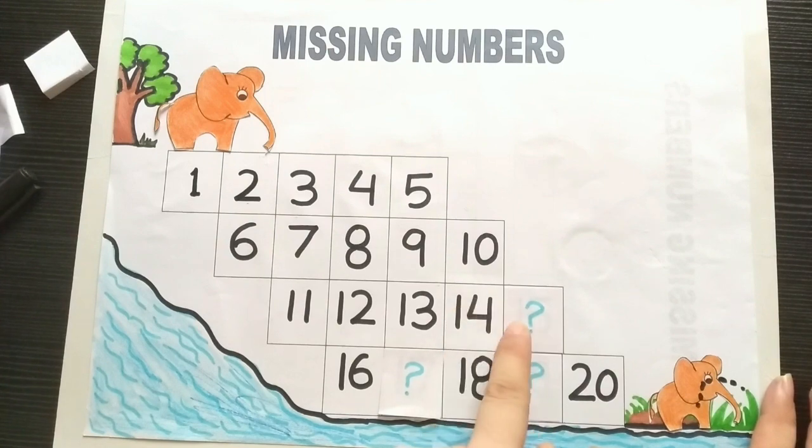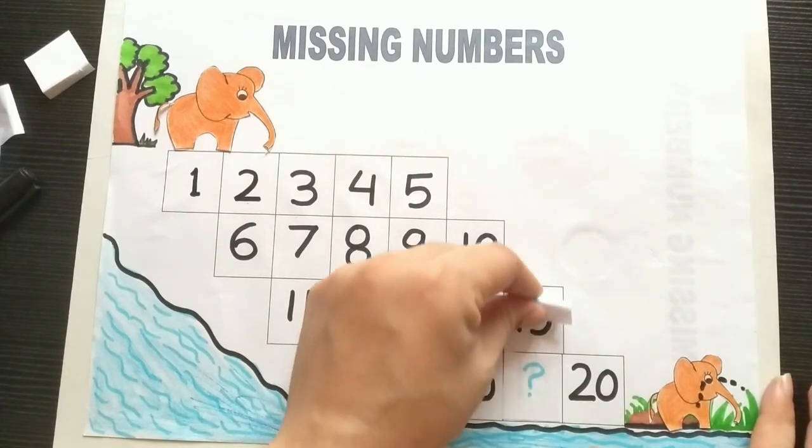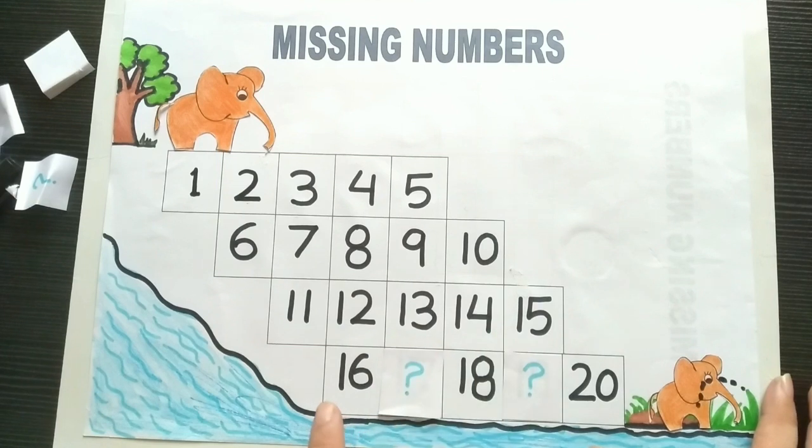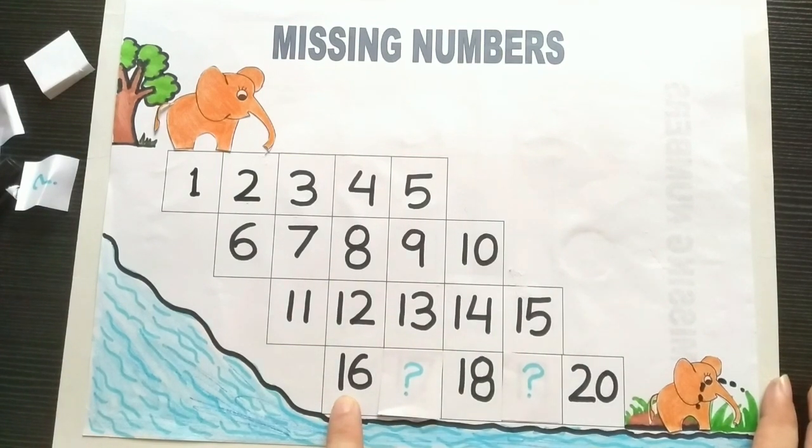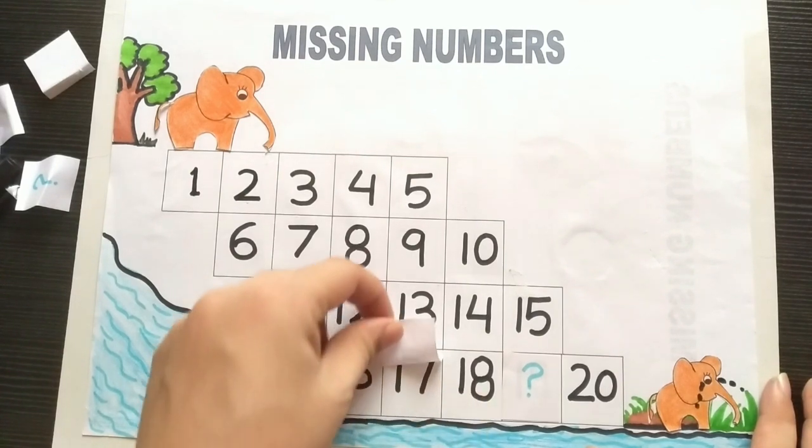Tell me, what comes after fourteen? After fourteen is number fifteen. Fifteen, after fifteen is sixteen. After sixteen is, what comes after sixteen? What comes between sixteen and eighteen? Number seventeen.